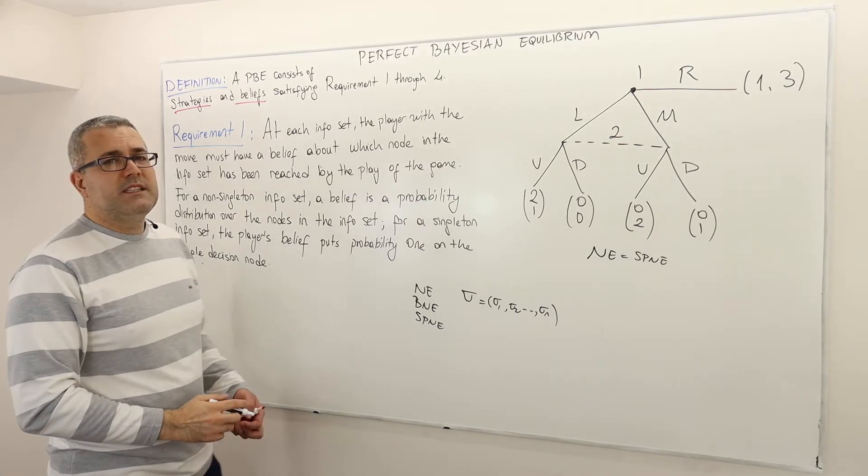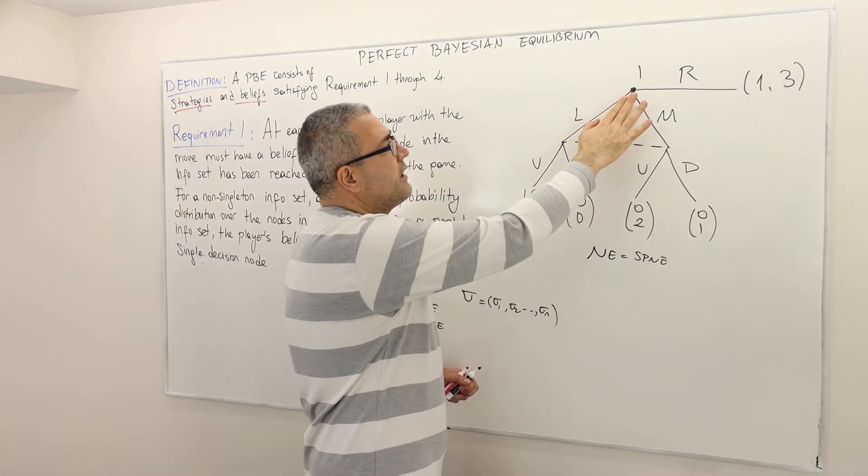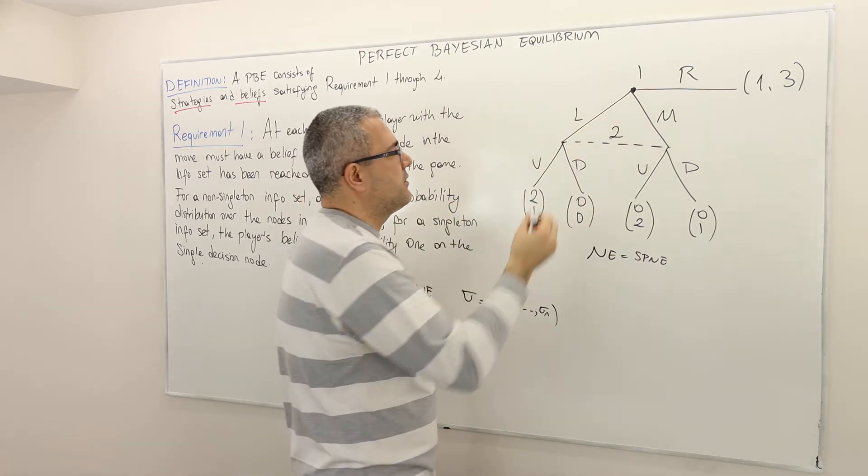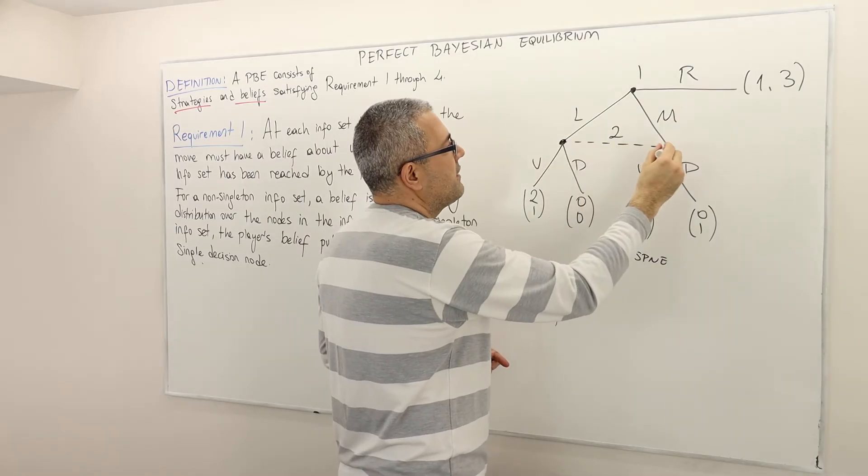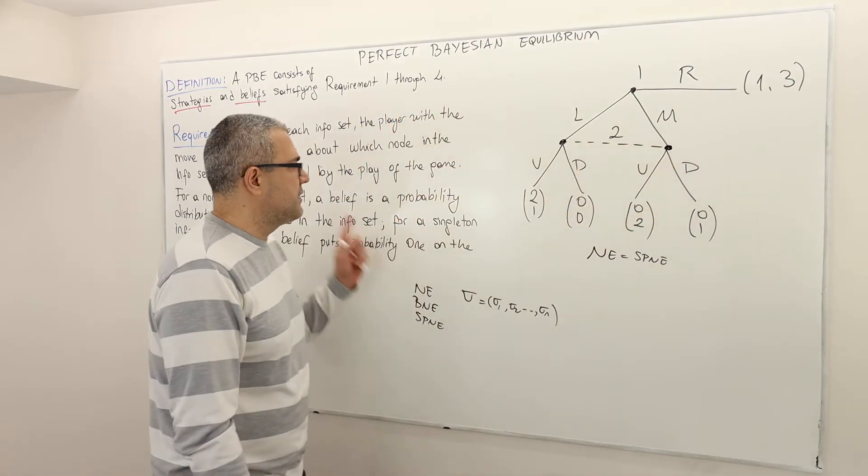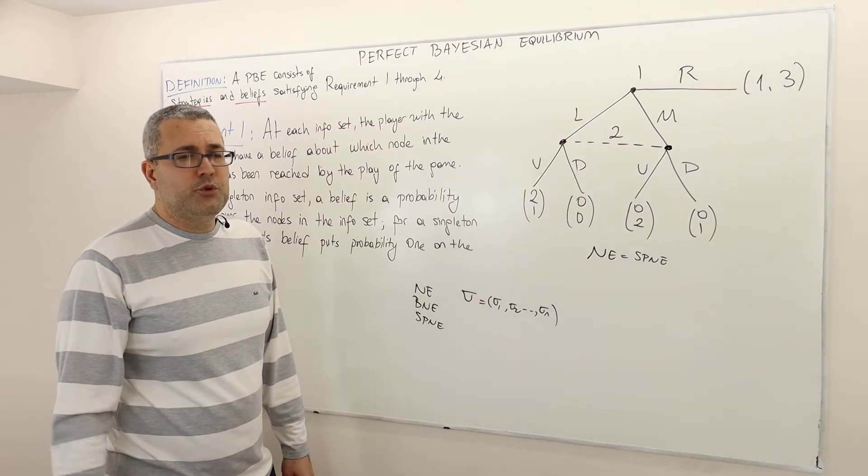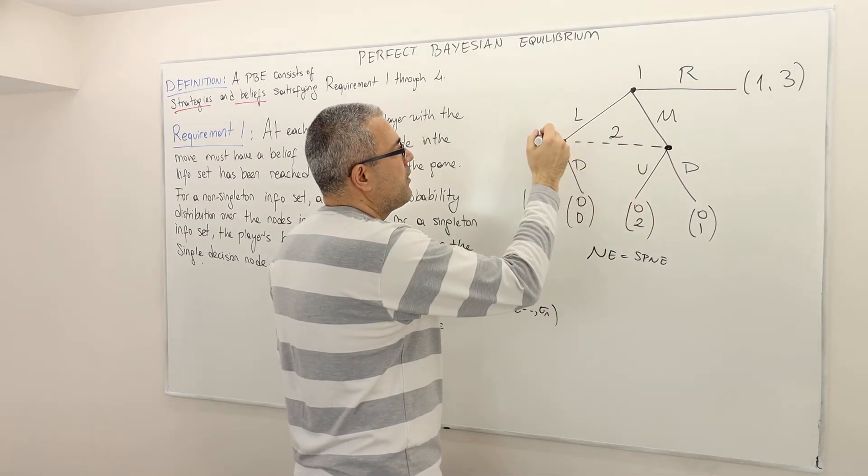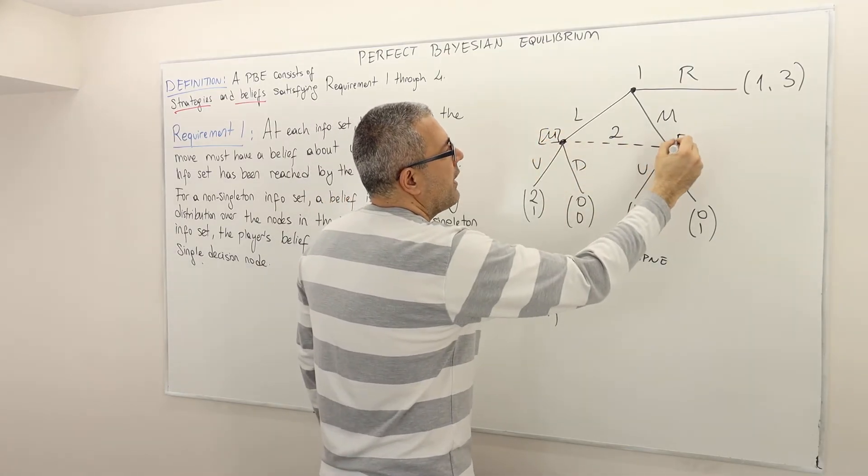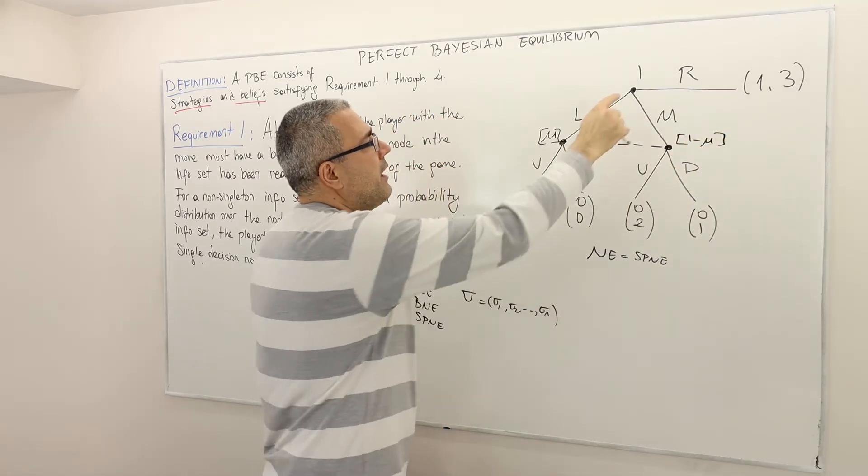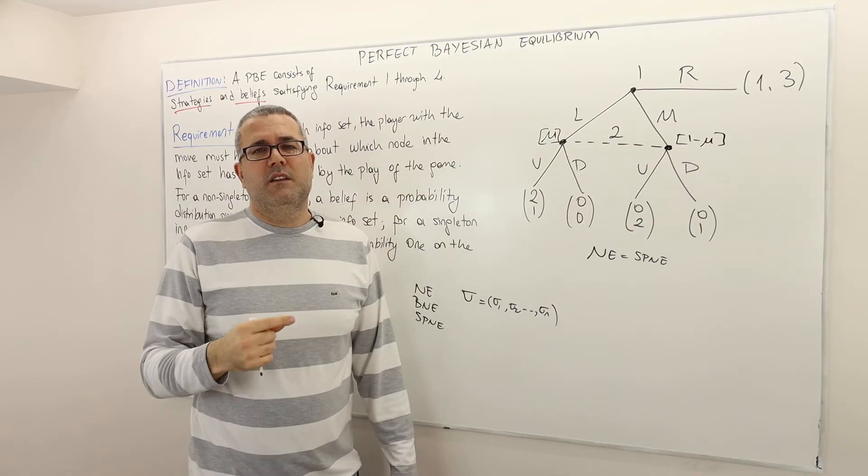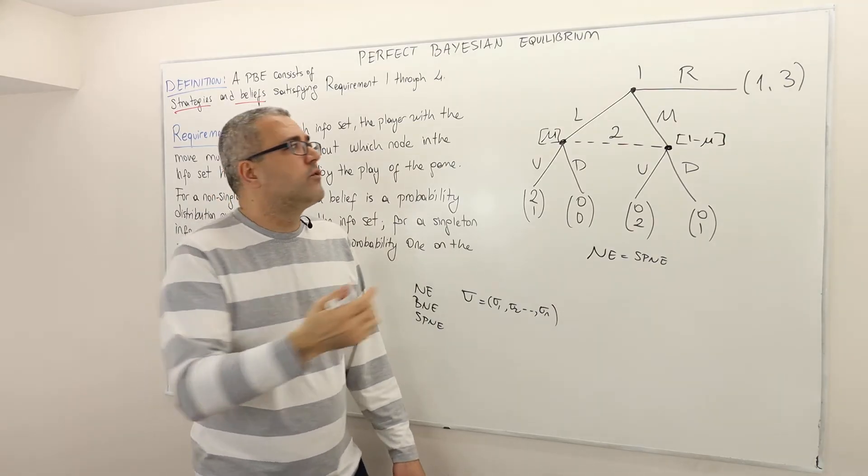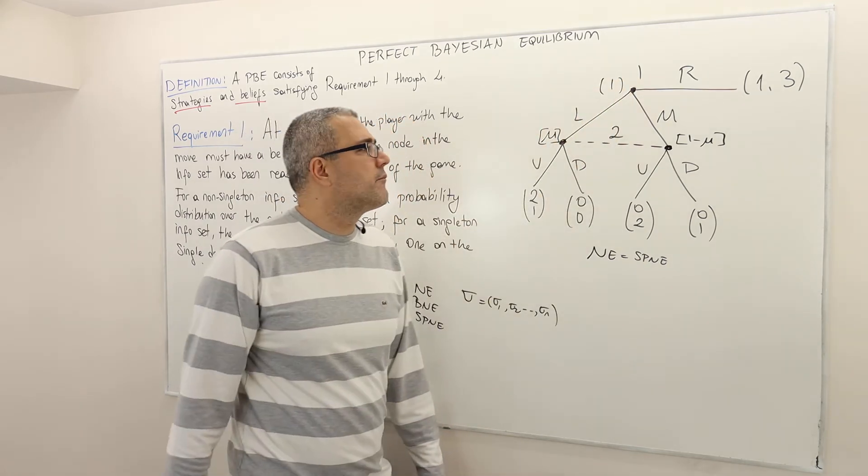Okay. So what does that mean? That means here there's one decision node, one singleton info set, and one non-singleton info set. Alright. So there are two info sets. So in the non-singleton information set, there should be a probability distribution over these decision nodes. So because there are two decision nodes, I'm going to call this one or put here mu and therefore here 1 minus mu. What about this info set? Well, because it's a singleton information set, well, it's probability 1. We do not need to write it, but just for this case, I'm going to write.